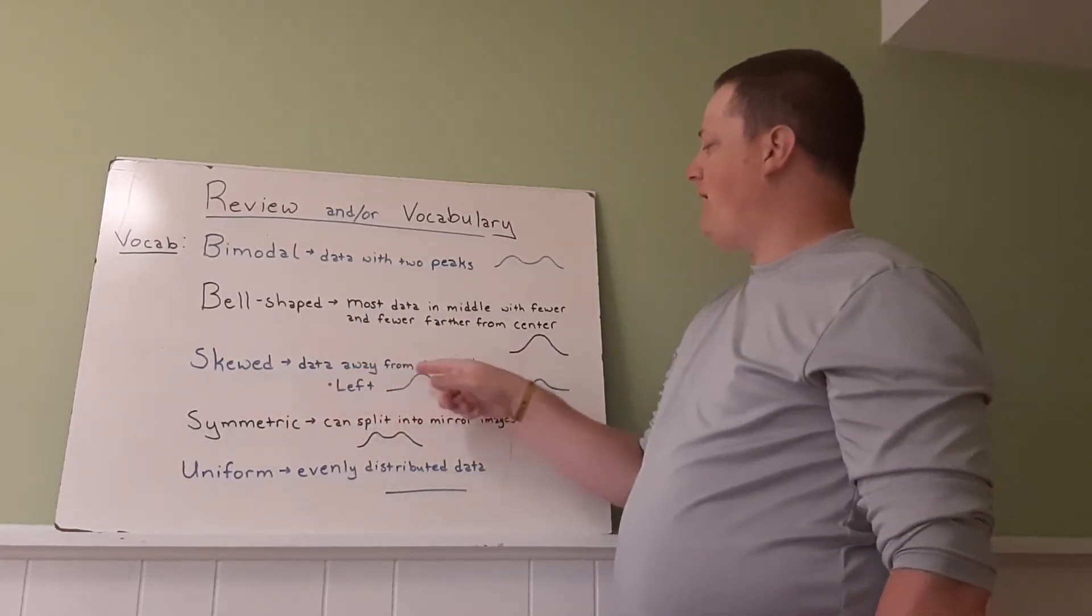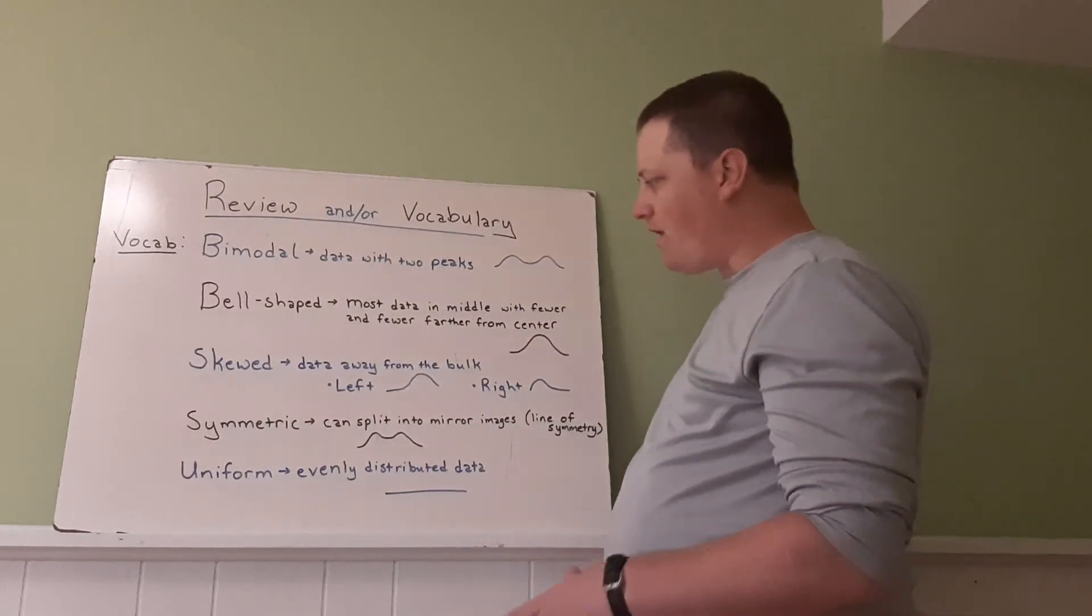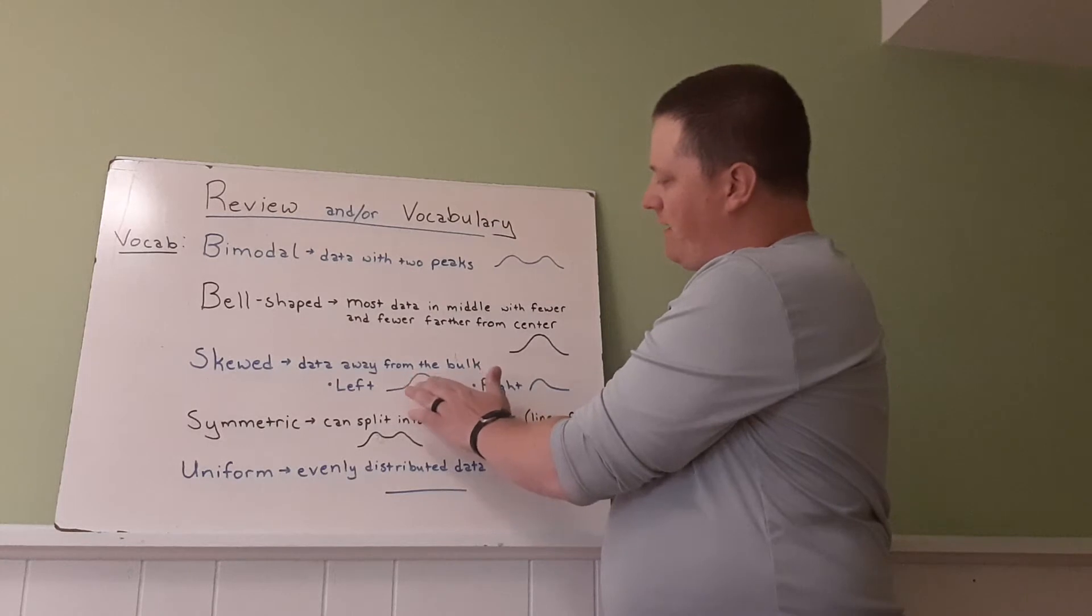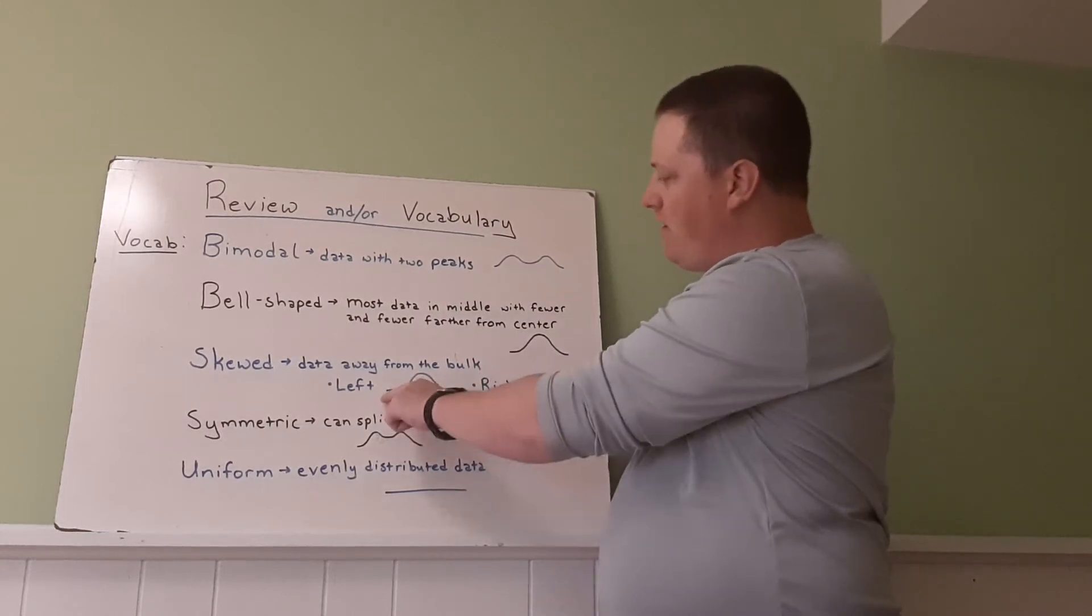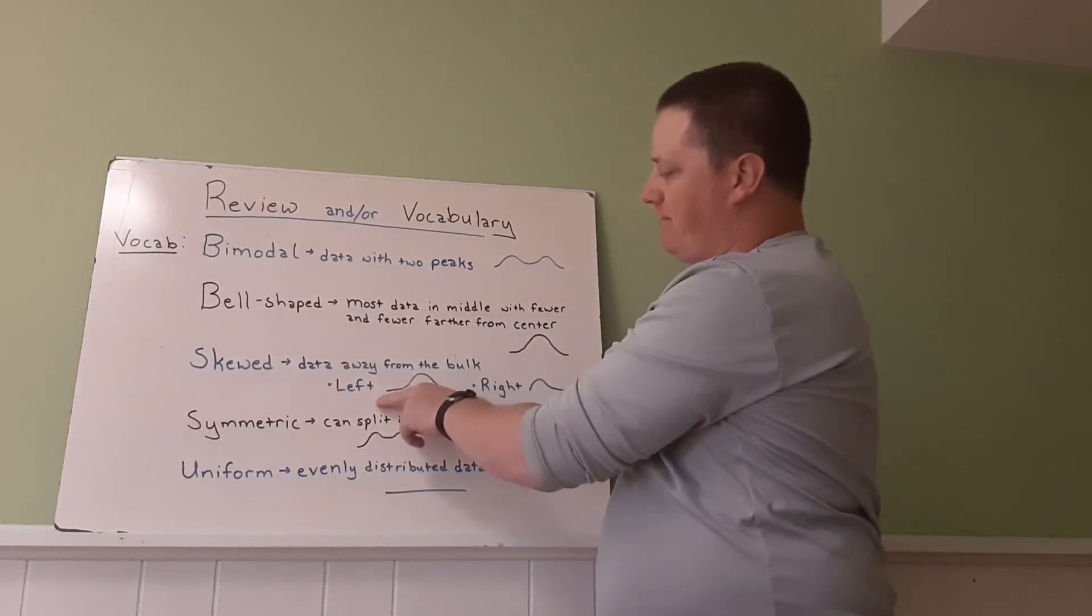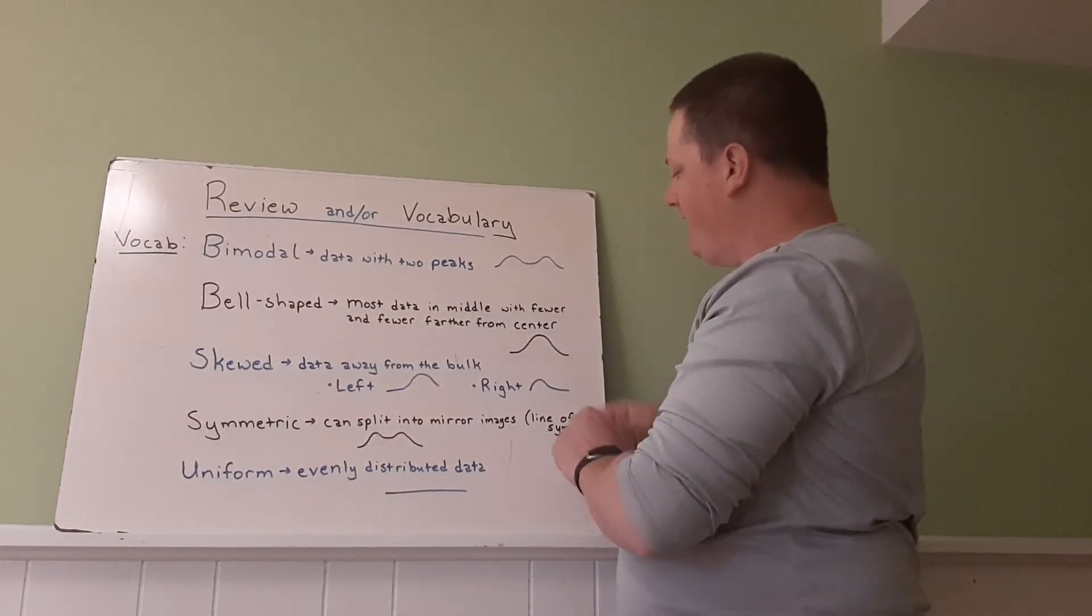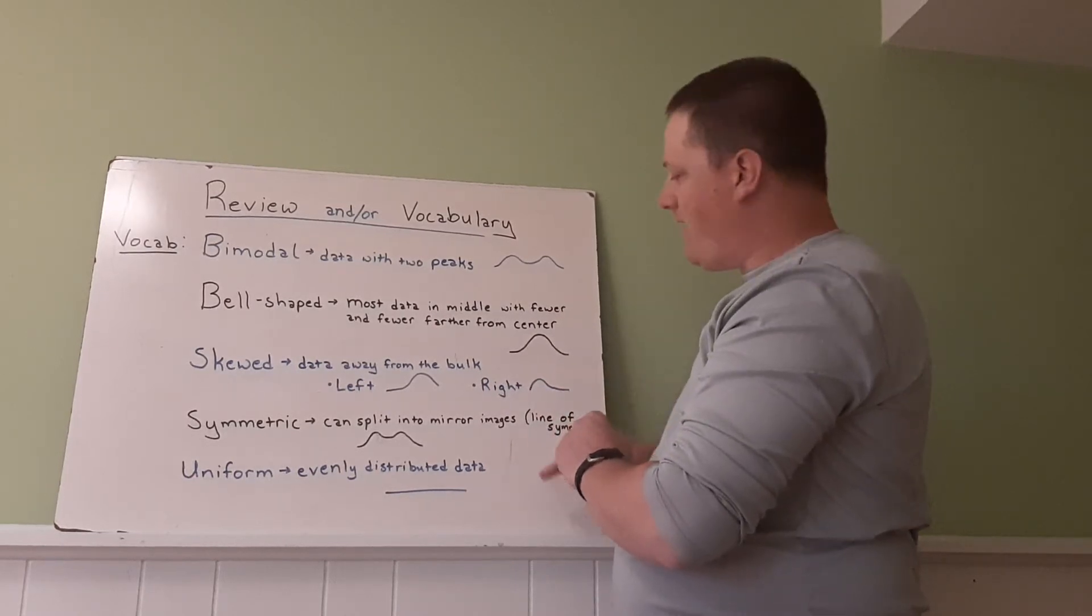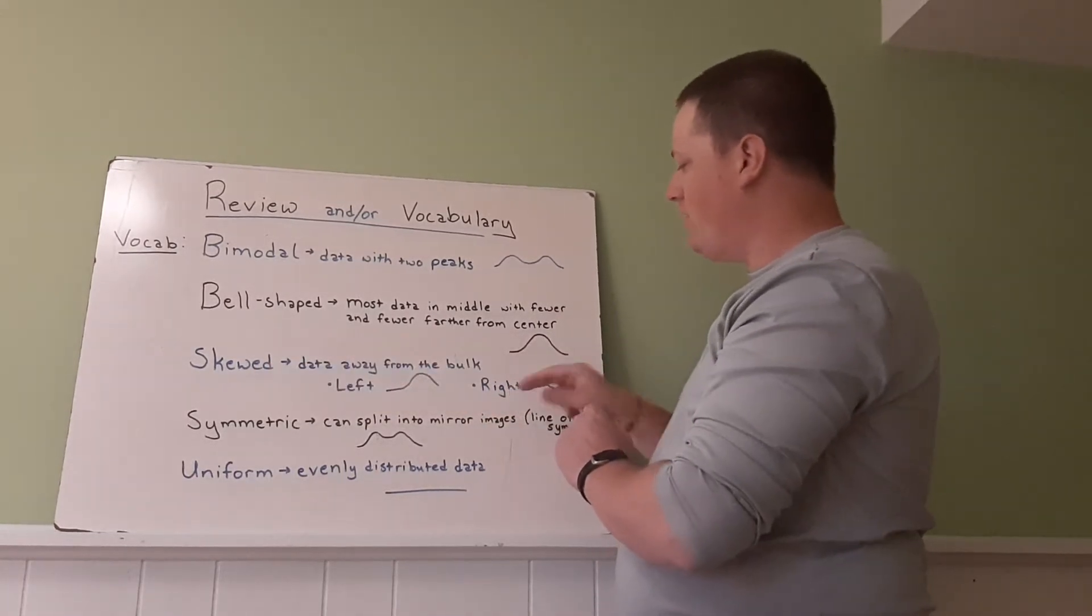Skewed. Data away from the bulk. So there's two types of skewed. Notice when I drew this one out, most of the data is on this side with a little bit on the left. So that's known as skewed left because there's a little bit of data on the left. Most of the data is over here. There's a little bit of data on the right. So this is known as skewed right.